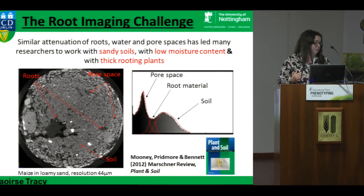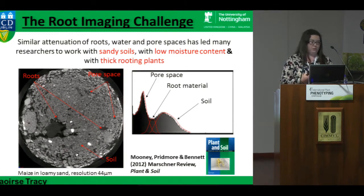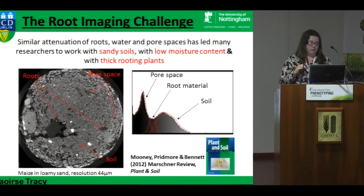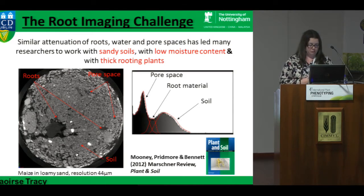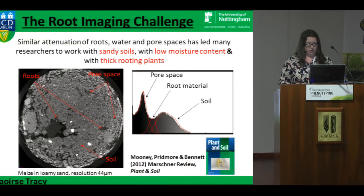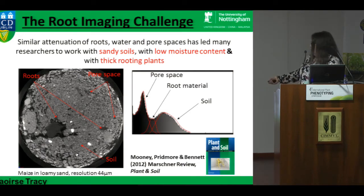Roots fall in the middle of the grayscale range. For each scan we get a histogram, and traditionally you'd have two peaks — a solid peak and an air peak — with the root material falling somewhere in between. Trying to segment out the roots does prove a challenge because the density of roots is very similar to the organic component of the soil. Previous studies using X-ray CT to look at roots in the 80s and 90s were limited to thick roots in sandy soils to enhance contrast, or at low moisture content.